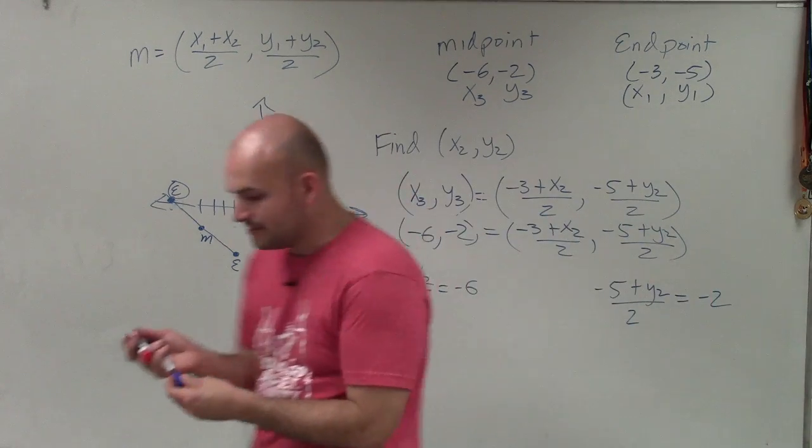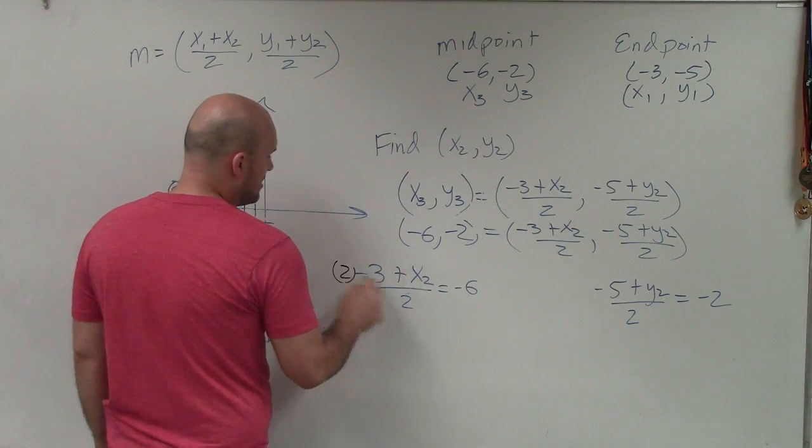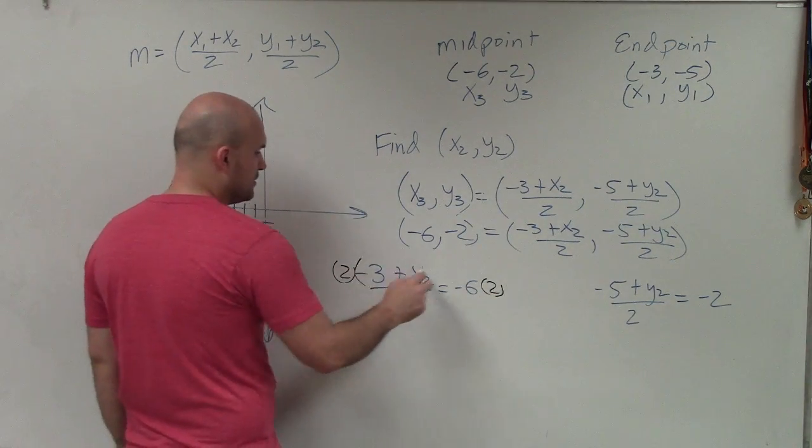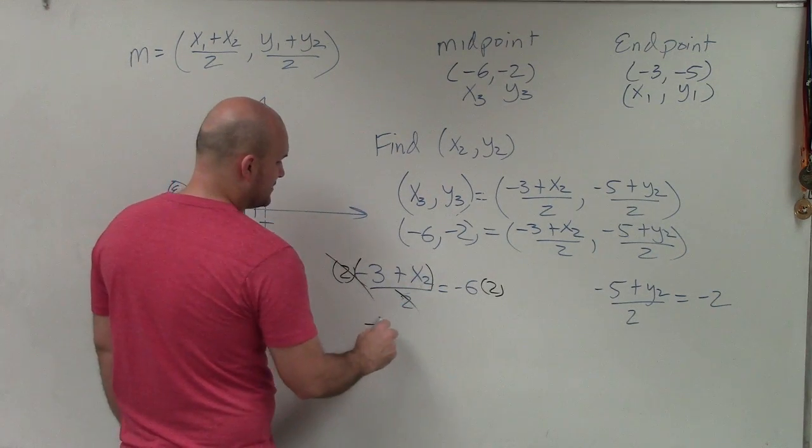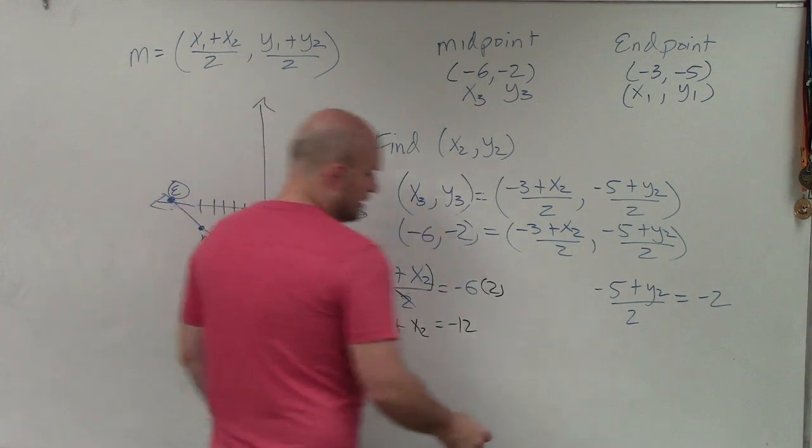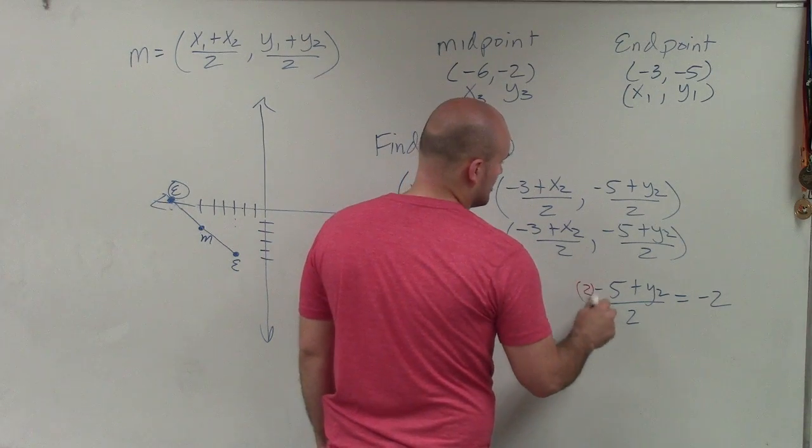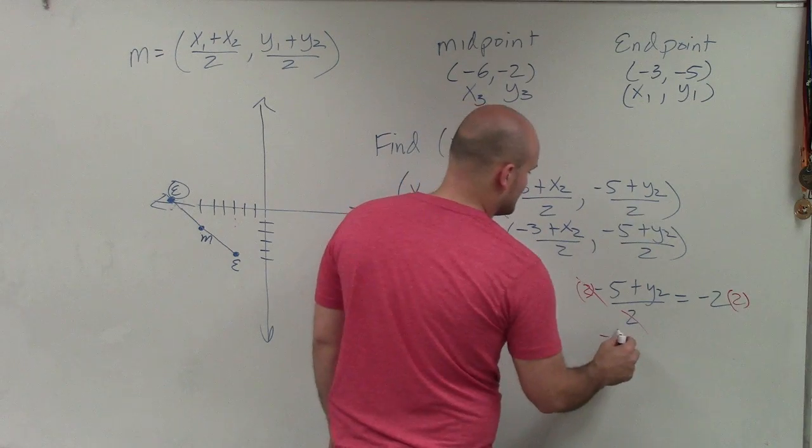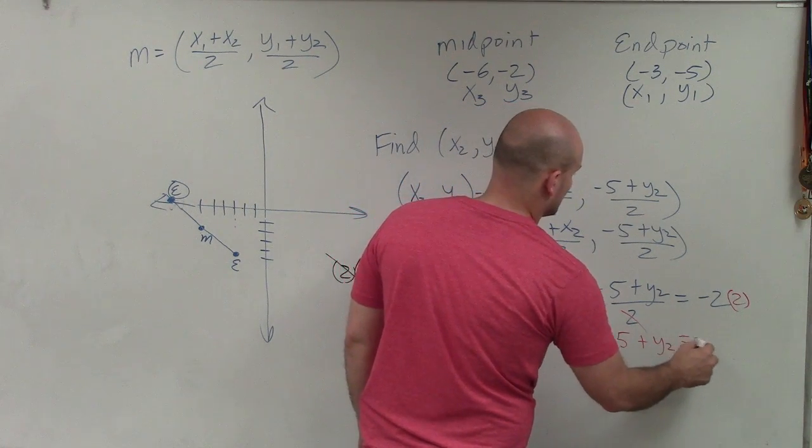Now, what I'm going to want to do is use my inverse operations to solve. So to do that, I'll multiply by 2 on both sides to get rid of the 2 off the denominator. When I multiply by 2 and divide by 2, those divide out to 1. So I'm left with -3 + x2 = -12. Over here, I'm going to do the same thing. I'm going to undo dividing by 2. So I'll multiply by 2 on both sides. Those now divide into 1. And I'm left with -5 + y2 = -4.